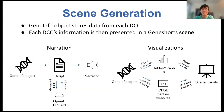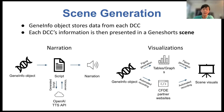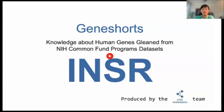Using the information inside this GeneInfo object, the pipeline is able to create each scene. Each scene organizes the information from its particular data coordinating center in a digestible way. The pipeline generates a script based on the data, which is fed to OpenAI's API to create narration. The visualizations on each scene are created either using Python packages or by automating the recording of a Common Fund program data portal. After each scene is created, they are stitched together into a final GeneShort.